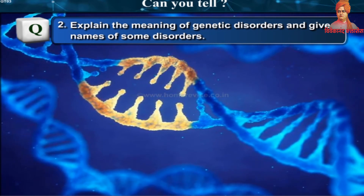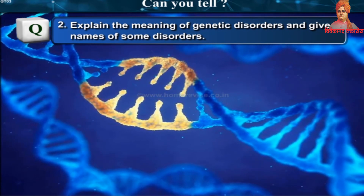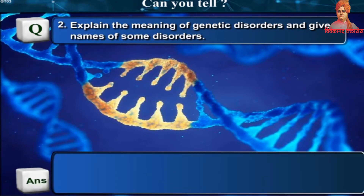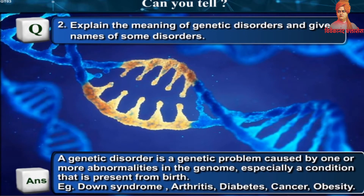A genetic disorder is a genetic problem caused by one or more abnormalities in the genome, especially a condition that is present from birth. Examples include Down syndrome, arthritis, diabetes, cancer, and obesity.